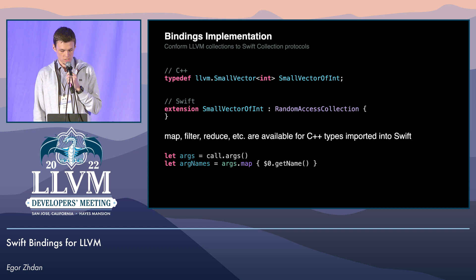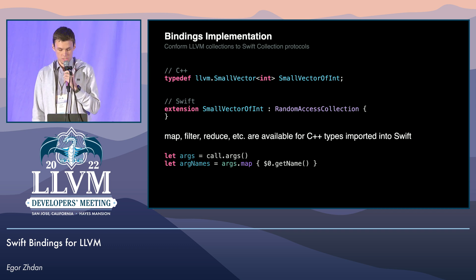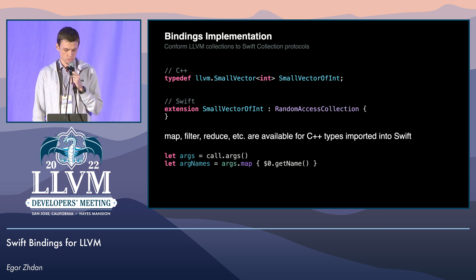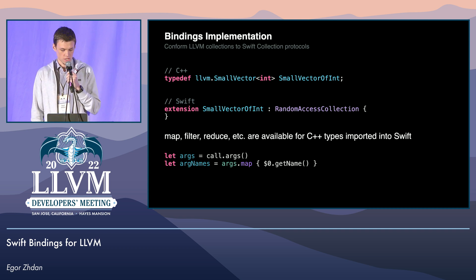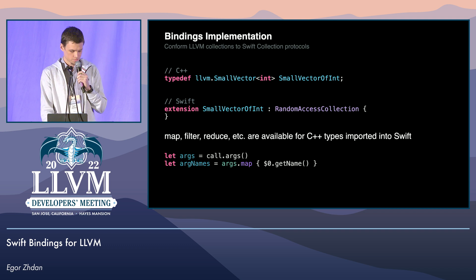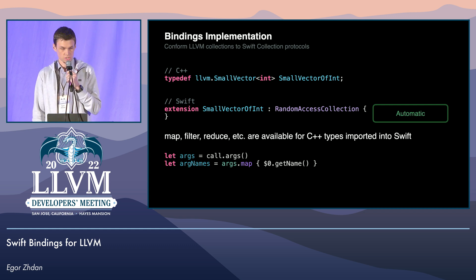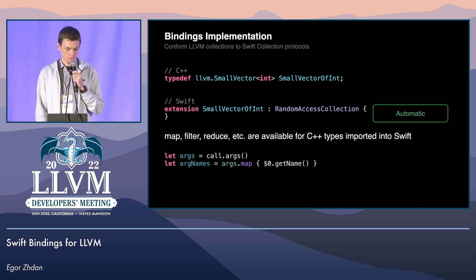Here is a brief overview of how the Swift standard library APIs will be made available on LLVM collections. With Swift and C++ interop, you can make C++ types conform to Swift protocols. Here in particular, I am conforming the LLVM SmallVector to Swift's RandomAccessCollection protocol. This makes all of the Swift collection APIs available on SmallVector. In this case, the compiler actually automatically synthesizes the conformance for SmallVector, based on the fact that SmallVector's iterator type implements the requirements of C++ random access iterator. So we get this conformance for free, and you don't need to add any conformances manually.